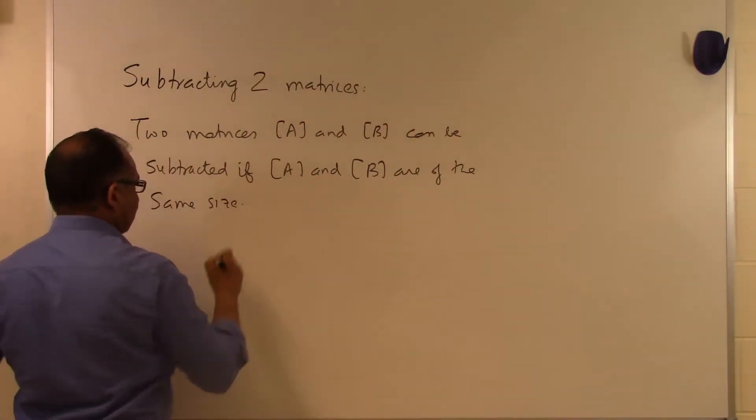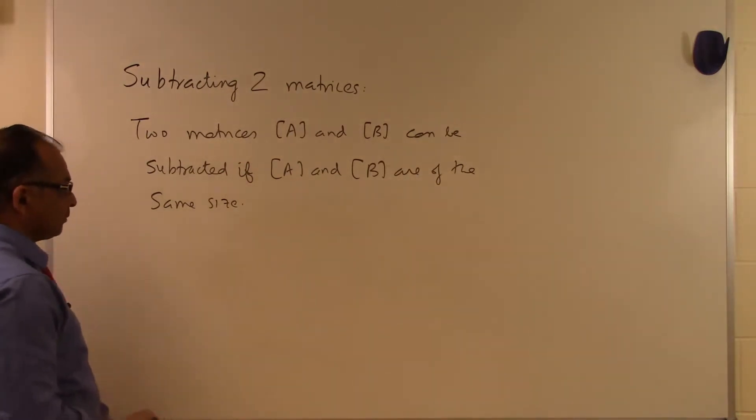The first thing which we have to see is that if we want to calculate A minus B or B minus A, A and B both have to be the same size. So the number of rows of A has to be the same as the number of rows of B. Number of columns of A has to be the same as the number of columns of B.